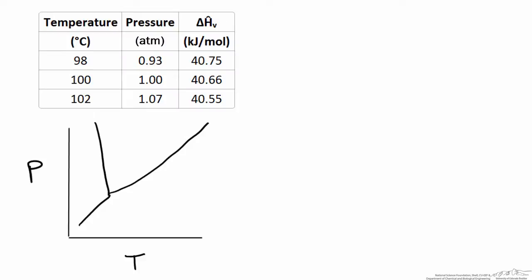To better understand what the heat of vaporization represents physically, we can relate the data to a phase diagram for pure water. The schematic shows pressure versus temperature and the regions where different phases exist: solid at lower temperatures, liquid at higher temperatures, and vapor at high temperature and low pressure. The boundary dividing the liquid and vapor regions is the vapor-liquid equilibrium line, where two phases can be maintained at equilibrium.